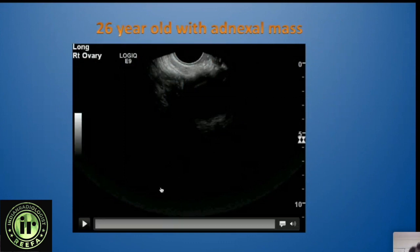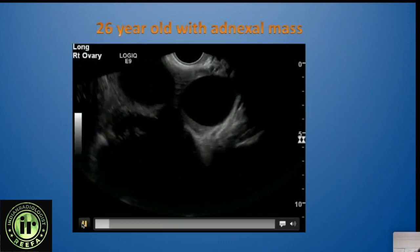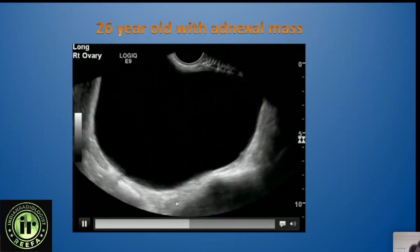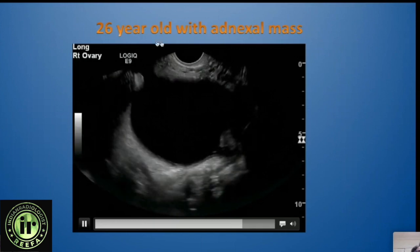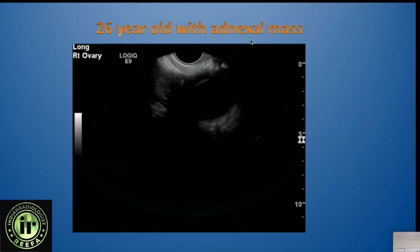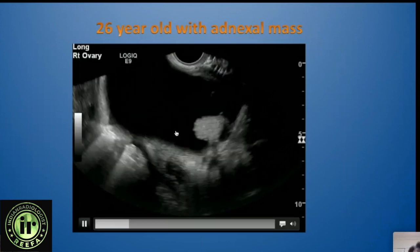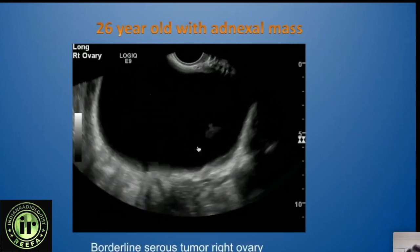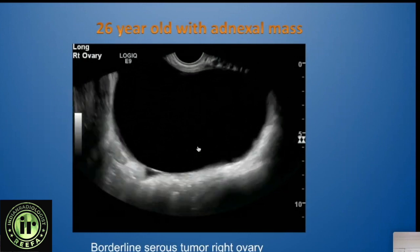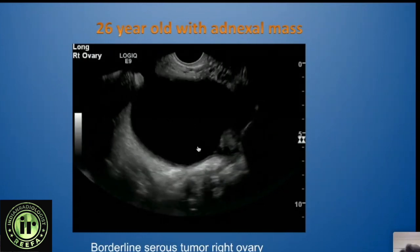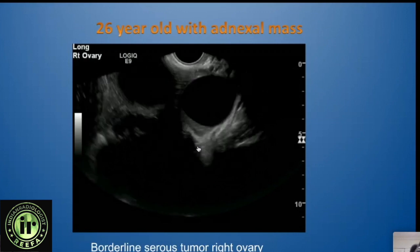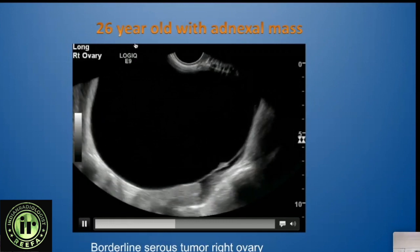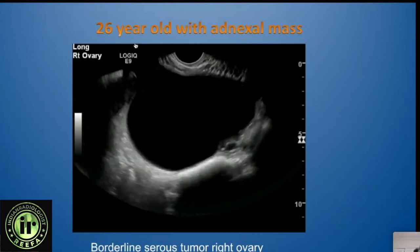Consider this case: a 26-year-old woman with what looked like a cystic mass but with a large nodule. Because she is young, one important consideration is a borderline serous tumor — and that is exactly what she had. These are tumors of low malignant potential, and it is important to recognize them because in this young patient, fertility preservation was a priority, so she underwent only a right salpingo-oophorectomy.